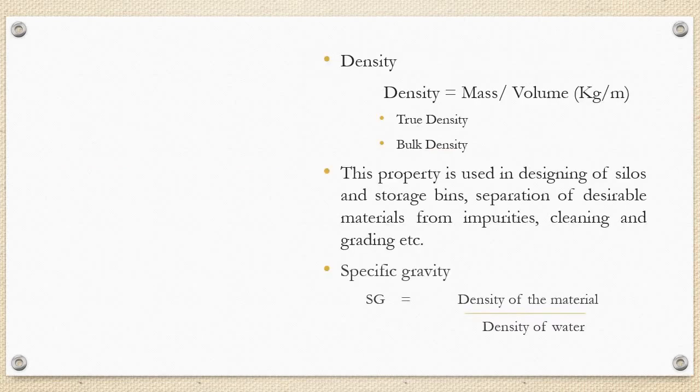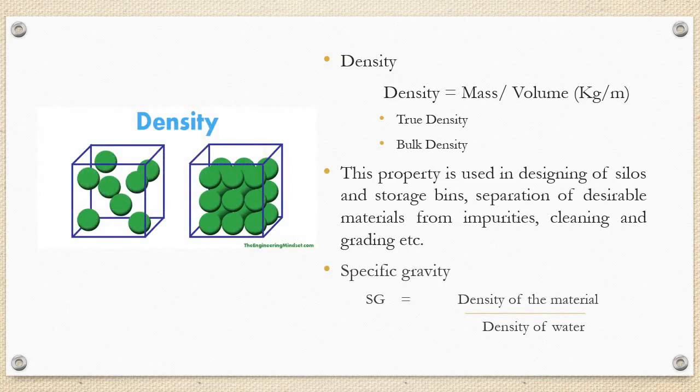Density of any material is expressed as weight of the material to the volume of the material. Density is further classified into true density and bulk density. True density is the density of the material devoid of the airspace. Whereas, bulk density is the density of the material including the airspace. The specific gravity is expressed as density of the material to the density of the water and it can be determined using a pycnometer.